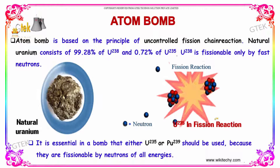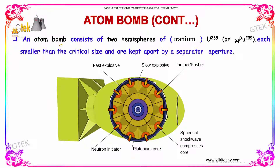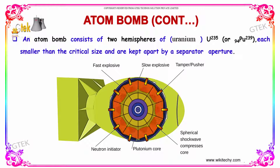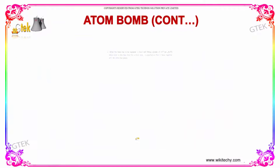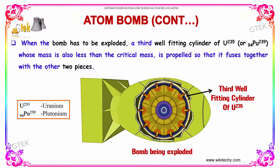An atom bomb consists of two hemispheres of uranium-235 or plutonium-239, each smaller than the critical size, kept apart by a separator. When the bomb is to be exploded, a third well-fitting cylinder of uranium-235, also less than critical mass, is propelled so that it fuses together with the other two pieces.